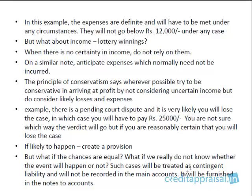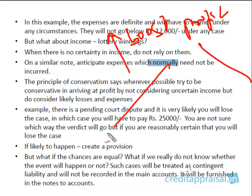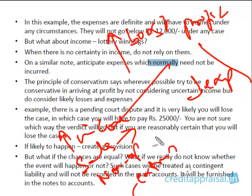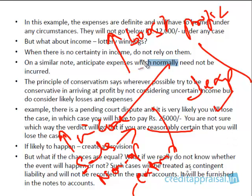The point to understand at this stage is: the principle of conservatism says not to unnecessarily boost profit. You can boost profit in two ways — by increasing income or by reducing expenses. If you're not certain that income is going to come, don't record it in the books. Similarly, on the expense side, if you're reasonably certain you're going to incur a certain expense, go ahead and record it. Don't boost profit. Be conservative in reporting figures — that's the principle of conservatism.